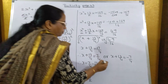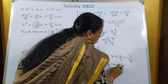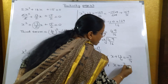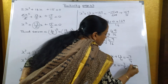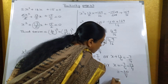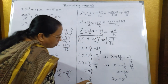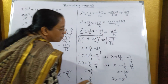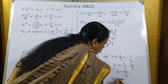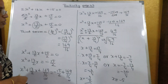Similarly, taking minus 7 upon 4: take 13 upon 4 to the other side, you get minus 7 upon 4 minus 13 upon 4, which equals minus 20 upon 4. So the other value of x is minus 5. So one value of x is minus 3 upon 2 and the other is minus 5 — the same answer as the formula method. I'll show by factorization method also.